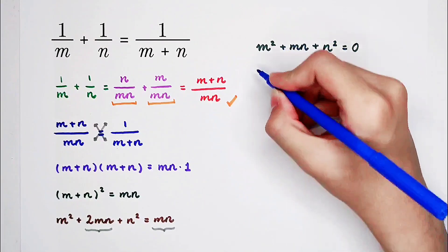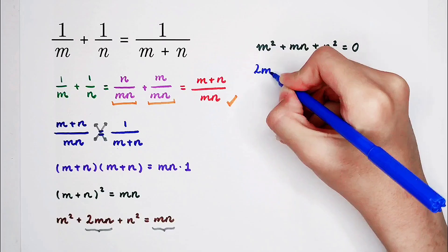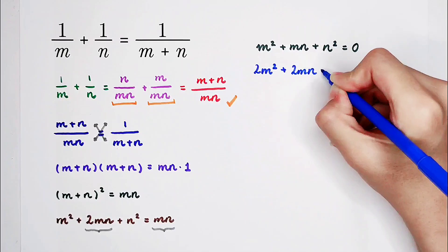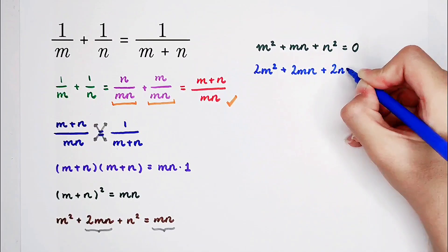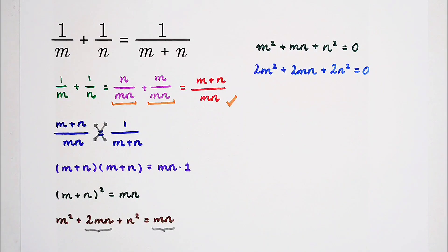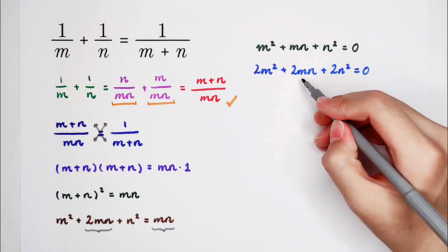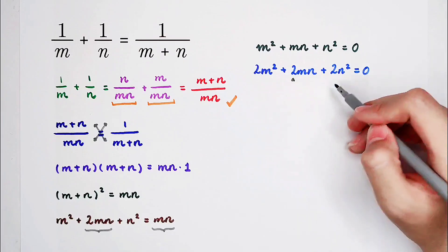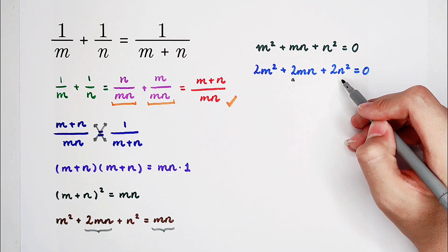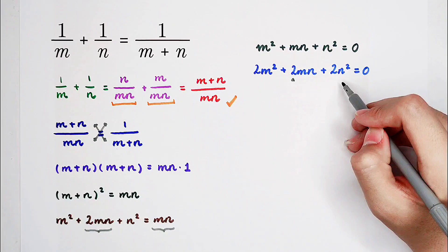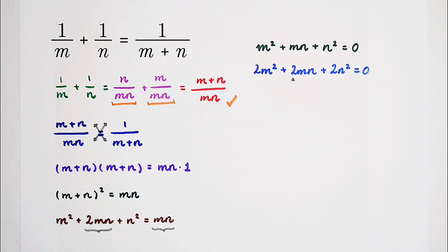So now 2 times m squared, then plus 2 times mn, then plus 2 times n squared is equal to 0. Oh my god! Now we have a problem! Although the coefficient of m times n is 2, the coefficient of m squared and n squared are also 2, not 1. Don't worry! We always have a method and we always have a way.